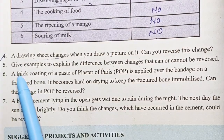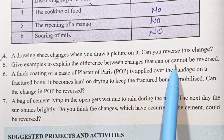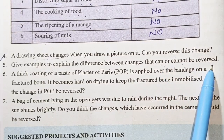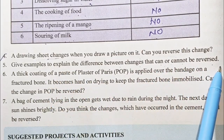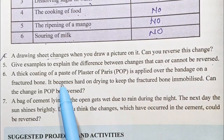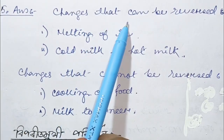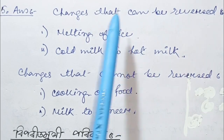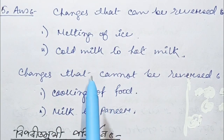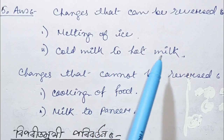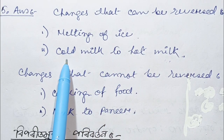Question number 5. Give examples to explain the difference between changes that can or cannot be reversed. The difference between changes that can or cannot be reversed: for example, melting of ice, or cold milk to hot milk.